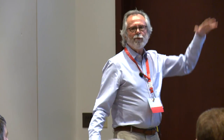This is a simple terminological chart to help sort out the difference between reproductive system, sexual system, and mating system.